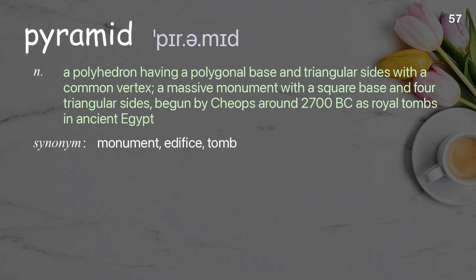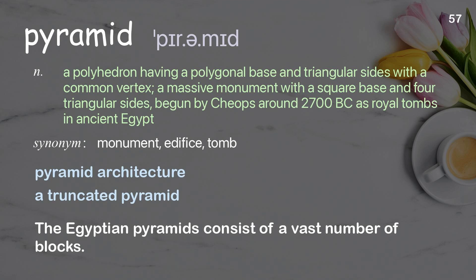Pyramid. A polyhedron having a polygonal base and triangular sides with a common vertex; a massive monument with a square base and four triangular sides, begun by Cheops around 2700 BC as royal tombs in ancient Egypt. Examples: Pyramid architecture. A truncated pyramid. The Egyptian pyramids consist of a vast number of blocks.